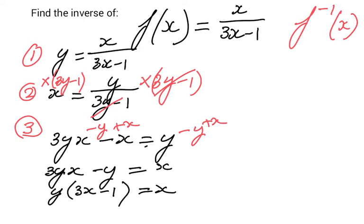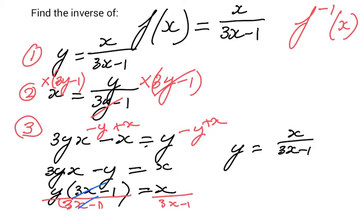Because then finally my final step is to get rid of the 3x minus 1. I divide it by 3x minus 1, only equal if I do the same thing on the other side. So if I do that, I take away that common factor. So what is it going to say then? y equals x over 3x minus 1.